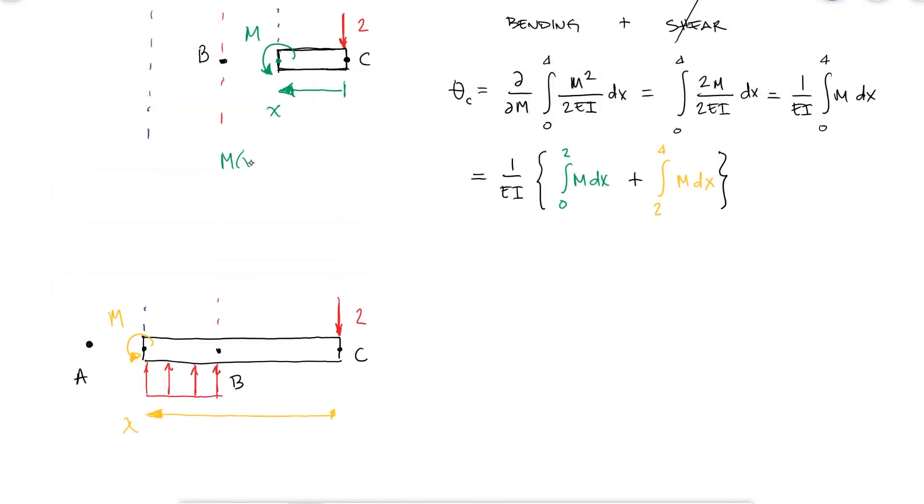The moment between C and B will be equal to minus 2x and the moment between B and A will be equal to minus 2x from the same point load plus the equivalent point load of the distributed load times the distance to where that equivalent point load is located.